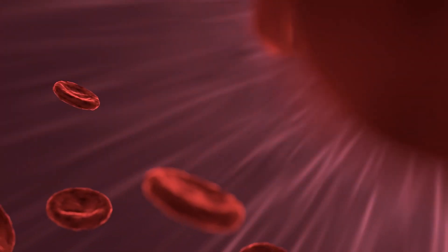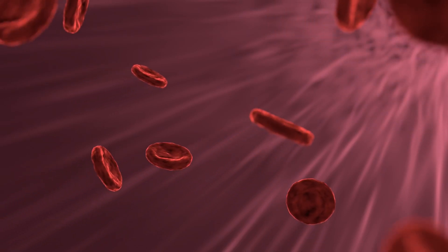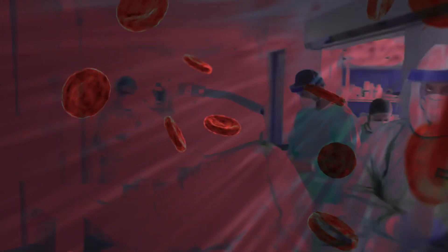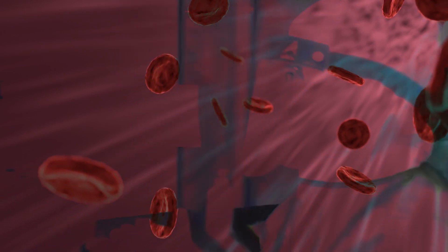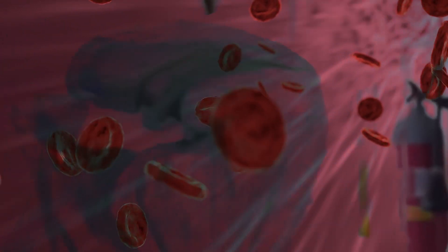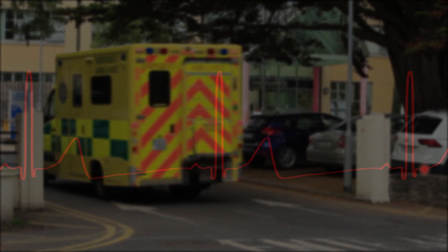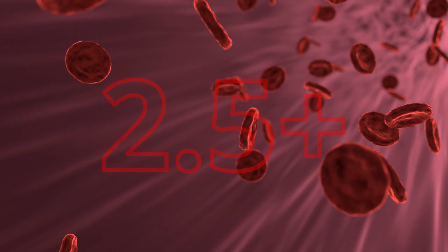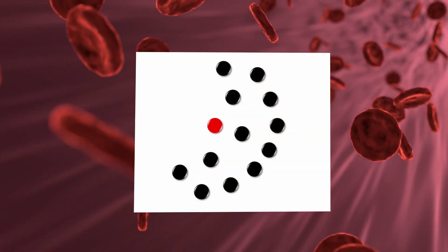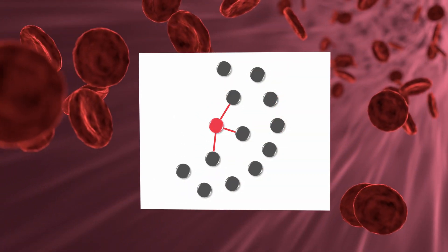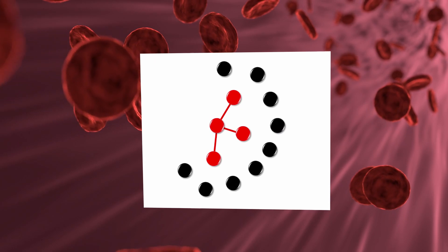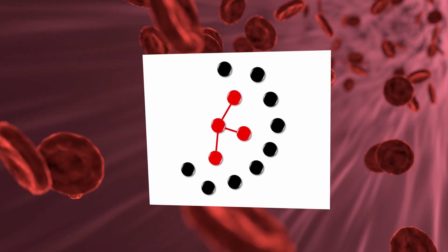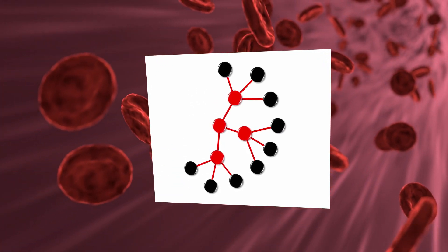First we need to understand what is meant by herd immunity. Epidemiologists describe a virus as having an R0 value. Put simply, this means the number of people a carrier will infect on average. Covid-19 is thought to have a value of a little over 2.5. Therefore, an average person might infect, say, three other people for simplicity. They will then each infect three more and so on.